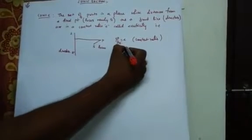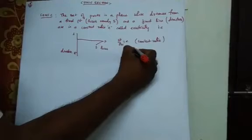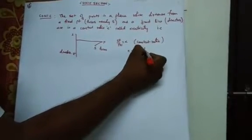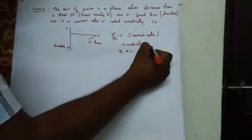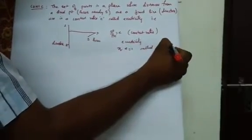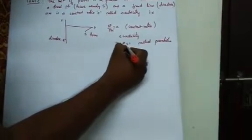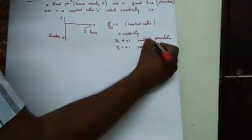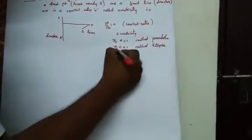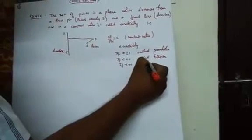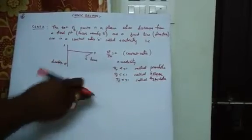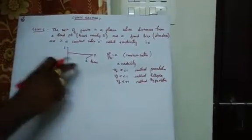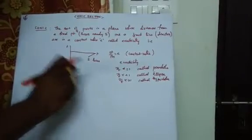This constant ratio E is named as eccentricity. If E equals 1, it is called parabola. If E is less than 1, it is called ellipse. If E is greater than 1, it is called hyperbola. Because we will take today the ellipse topic, and in KCT coordinate geometry they give 10 questions, and in JEE ellipse itself gets 2 to 5 questions.